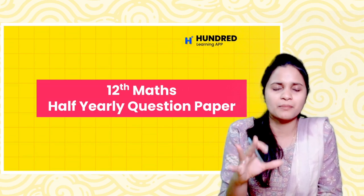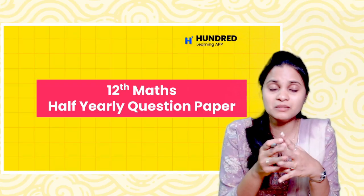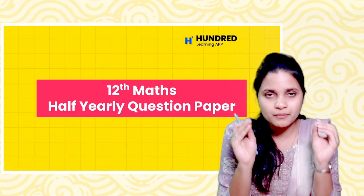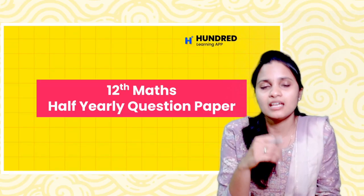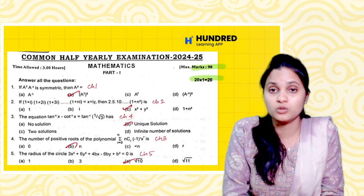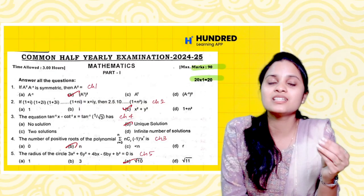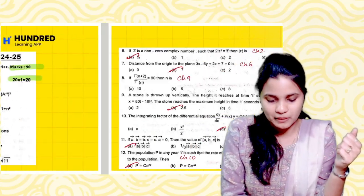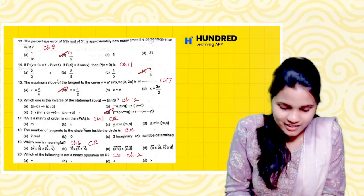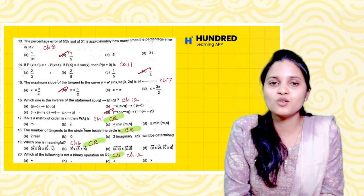Next year's class has a half-yearly question paper. How many creative questions do you want? What chapter do you want? Look at the list of questions and check the previous question papers. We have a total of 90 marks — that is 21 marks with no one-mark, and 20 marks. It will be easy to score, but for creative questions, check the book back questions to get the answers.